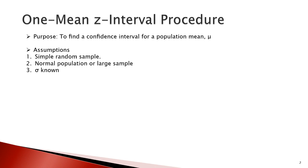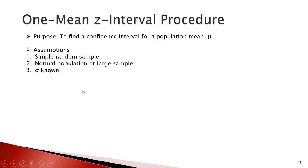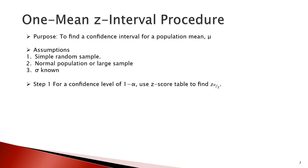This is called the one mean Z-interval procedure. There are three assumptions we need to satisfy: simple random sample, normal population or large sample, and sigma is known. The standard deviation sigma must also be known. These are the three assumptions to consider when doing the one mean Z-interval procedure.